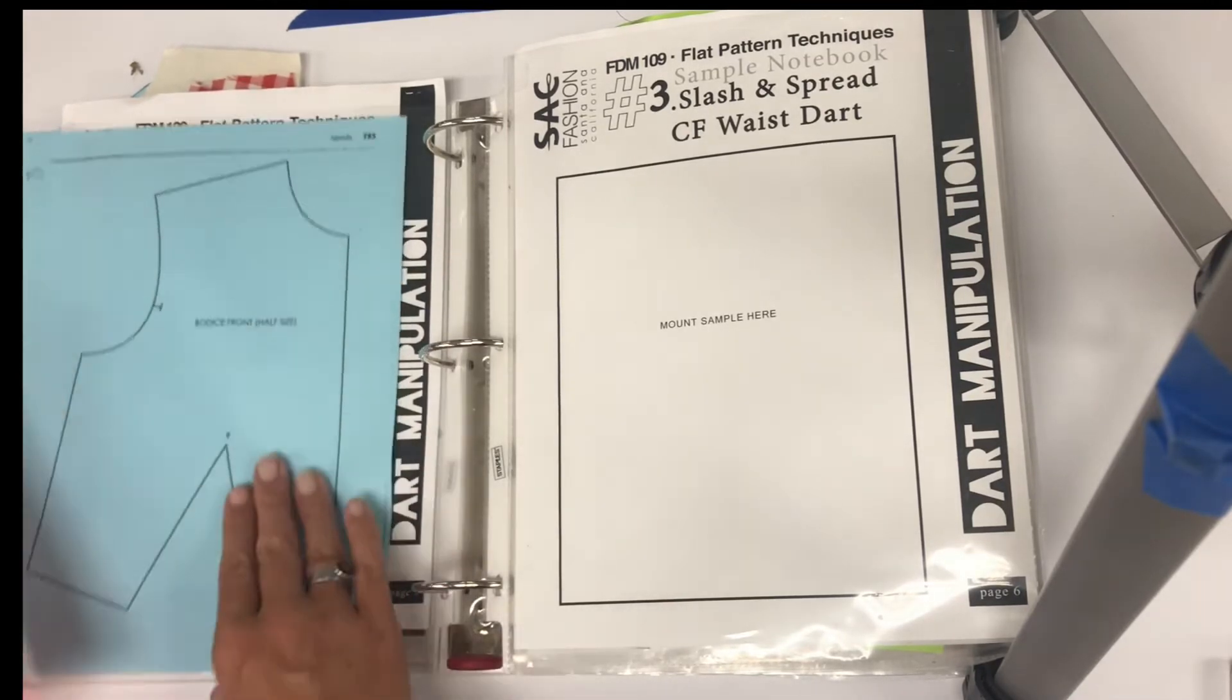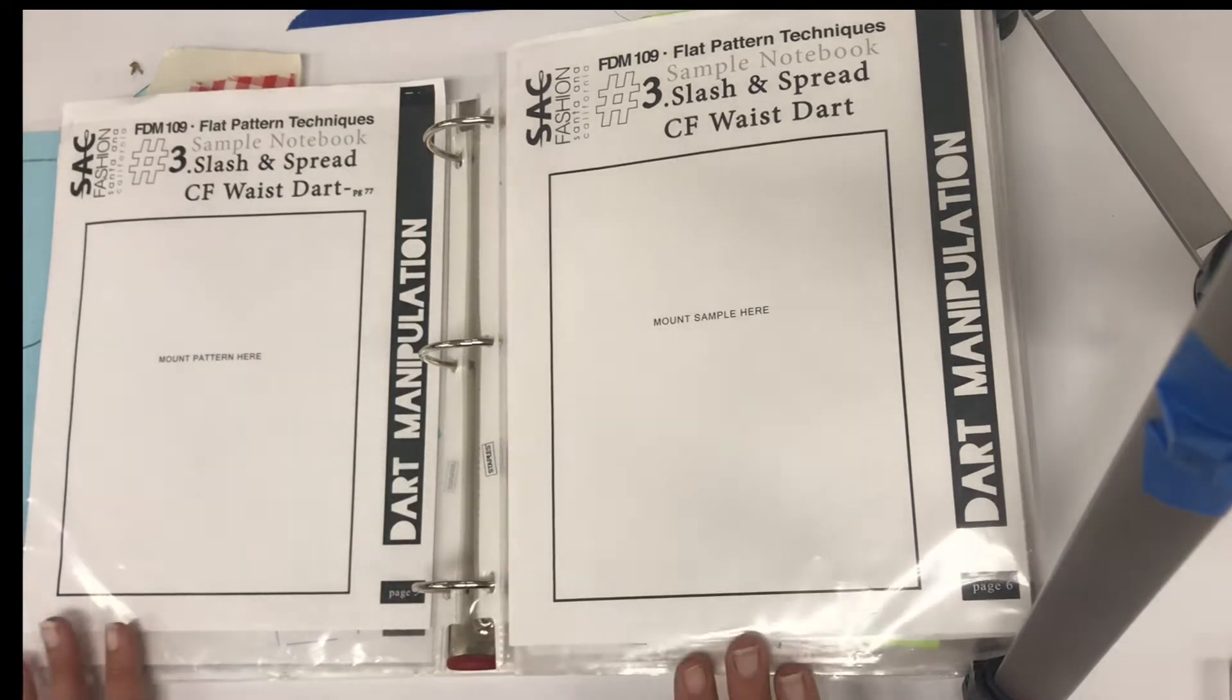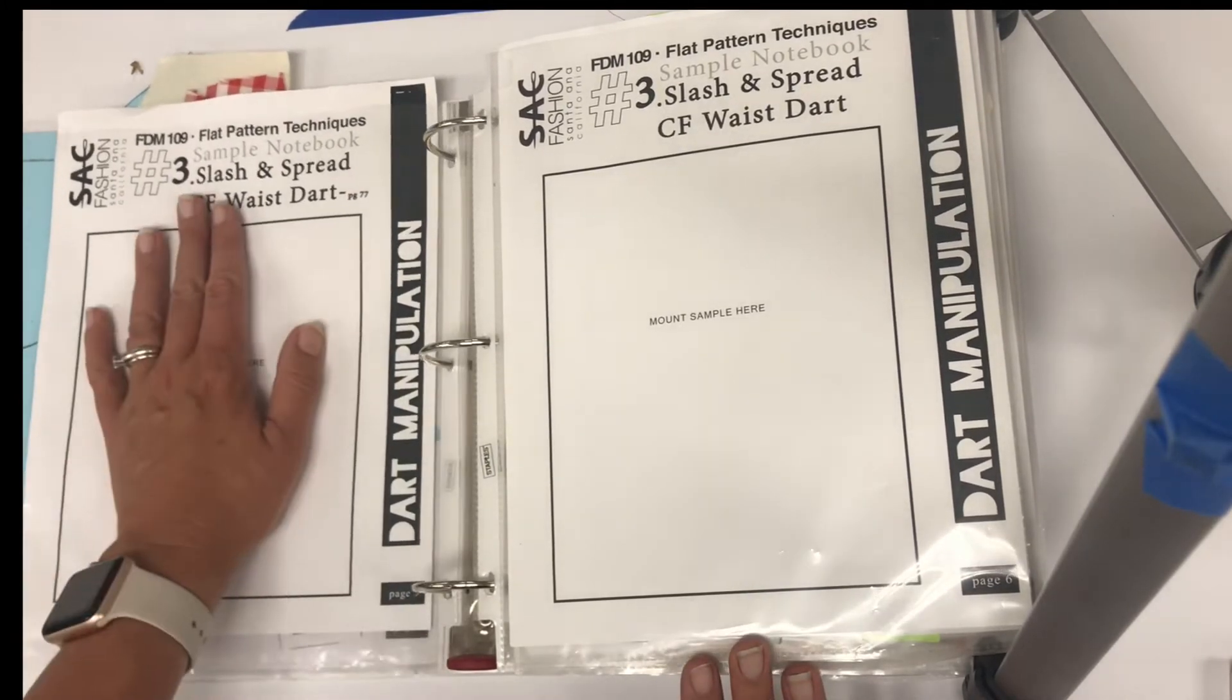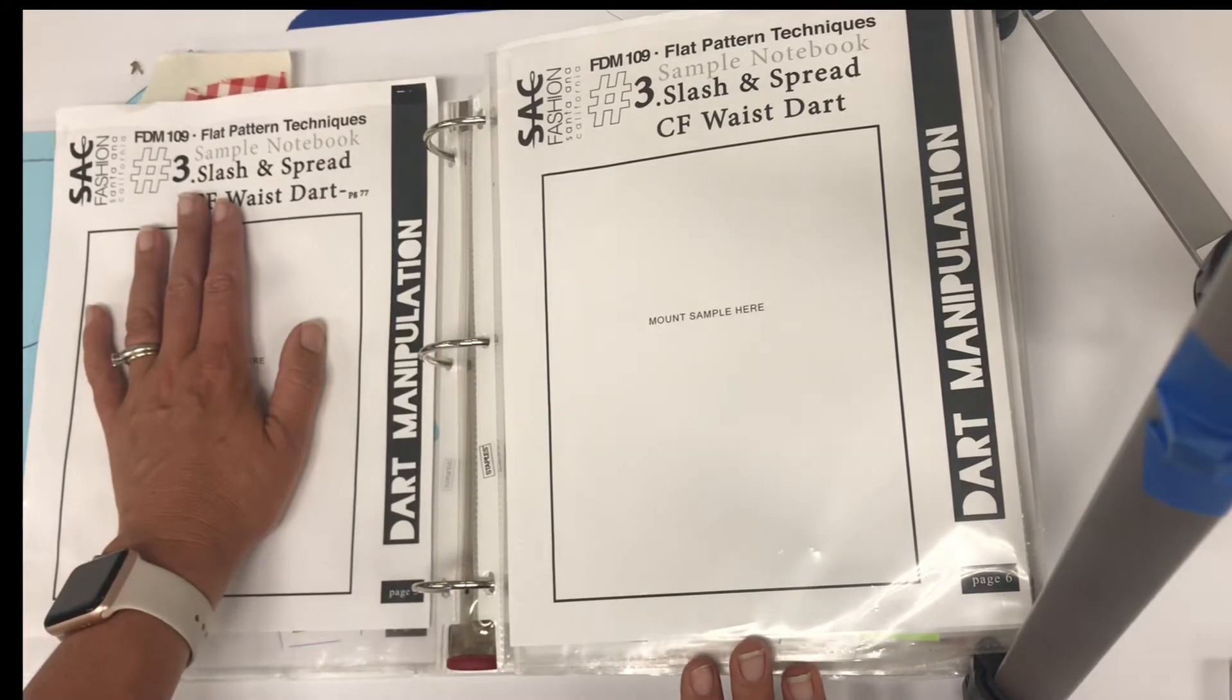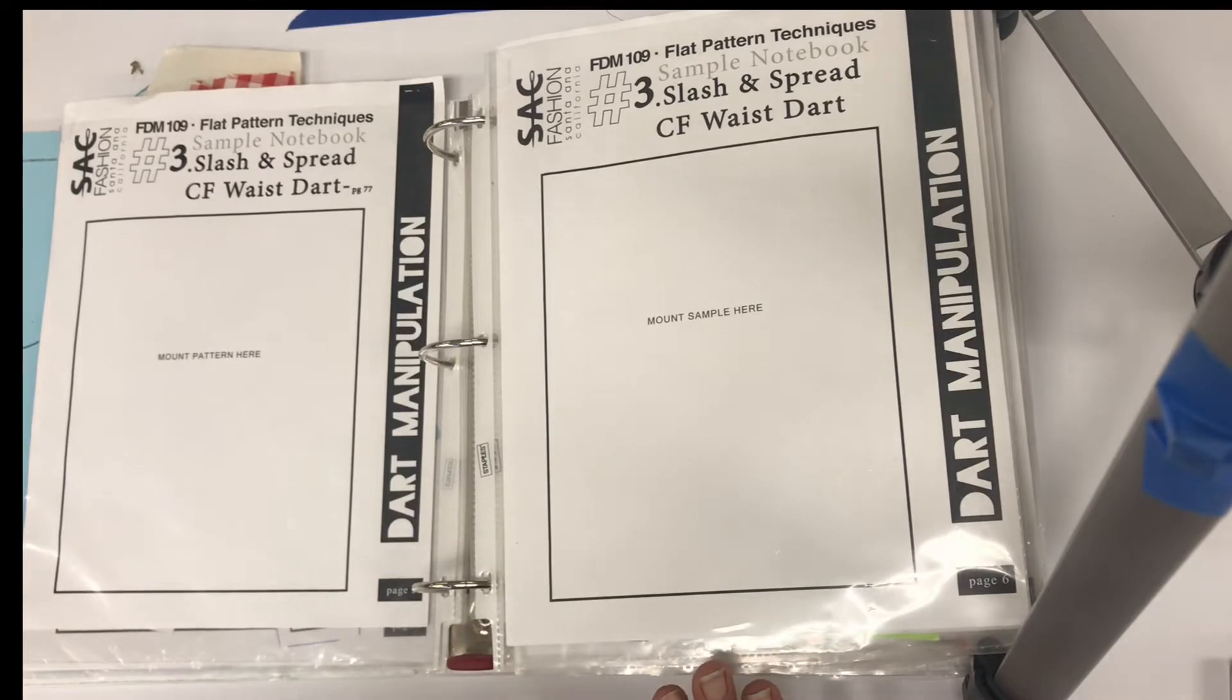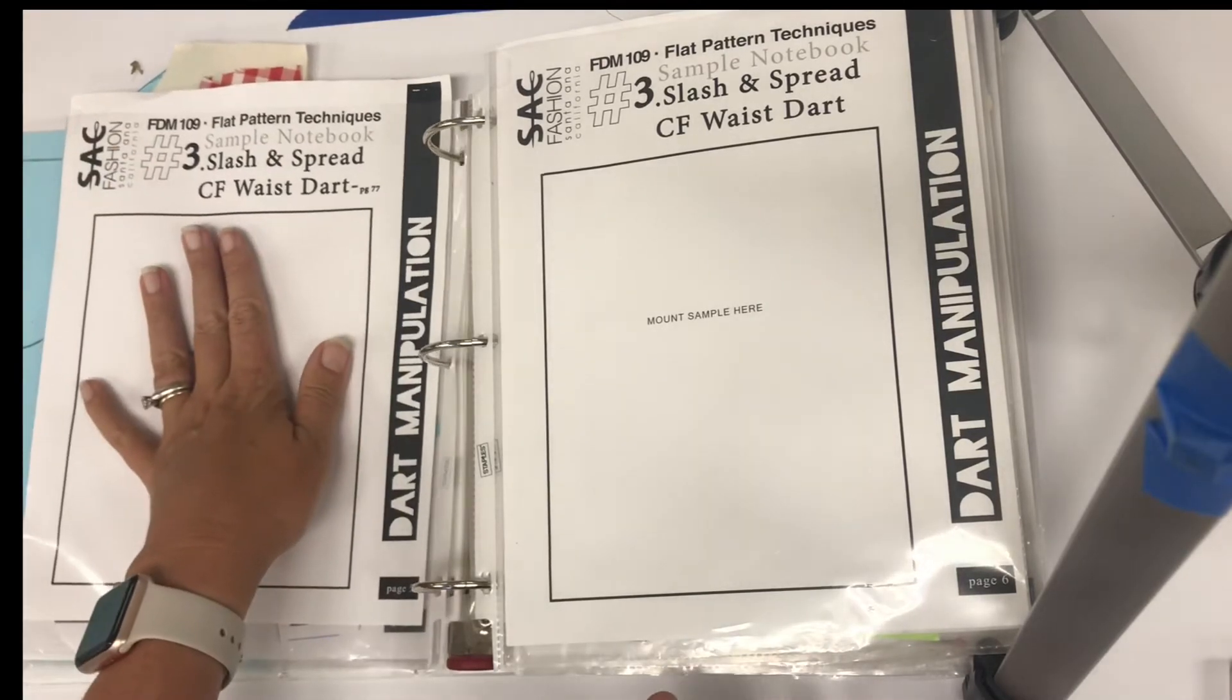Okay, there are two different techniques to move darts around. The first one we're going to do is called slash and spread. The other one we'll learn about later is called the pivotal turn method, but today we're gonna start with slash and spreading.